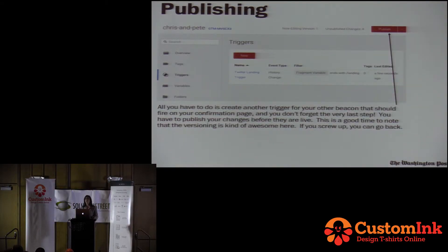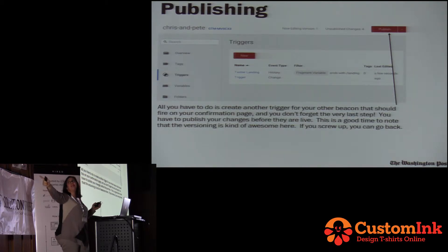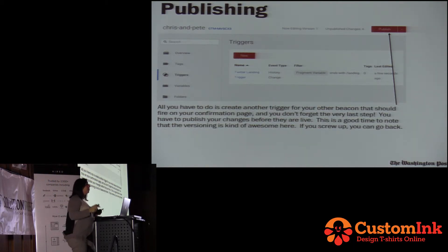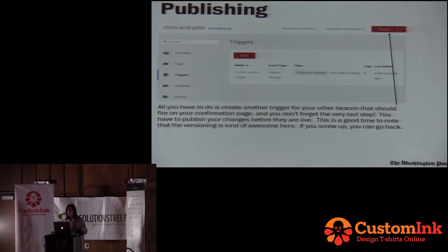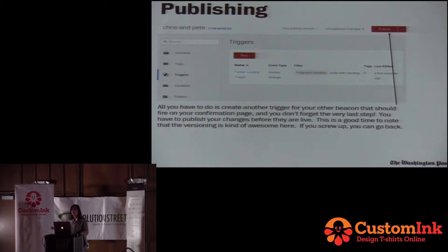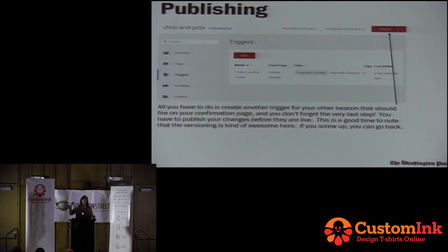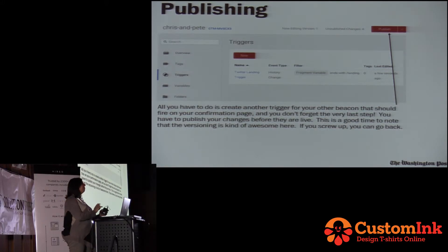We only care about the information after the pound sign in this case, so we choose the type of fragment. There's a tiny bit of gray text in the dropdown that tells you what part of the URL each option represents, which is nice if you forget or if Google makes its own decisions. We choose the fragment, and then we decide to end with 'landing' because that's our landing page. Now we have a variable to go with our trigger, and our trigger is complete. One thing you must remember: before you can see any of these changes, you have to publish them. Don't forget to click the red button — very, very important.